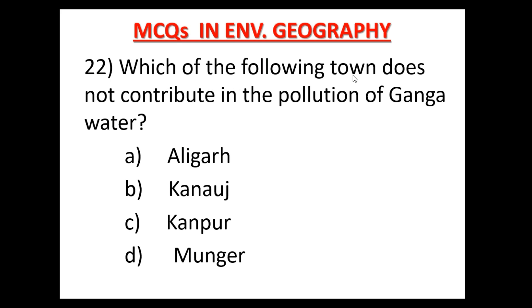Question 22: Which of the following towns does NOT contribute to the pollution of Ganga water? Option A: Aligarh, Option B: Kanauj, Option C: Kanpur, Option D: Munger. जो शहर गंगा नदी के किनारे स्थित नहीं है, वह गंगा को प्रदूषित नहीं करता। Kanauj, Kanpur, and Munger are situated on the banks of the Ganga, but Aligarh is not. Therefore, Aligarh does not contribute to the pollution of Ganga water. Option A is the correct answer.